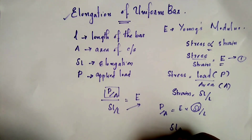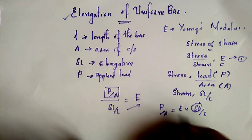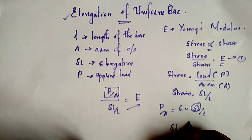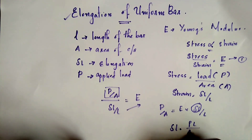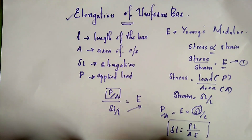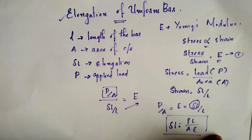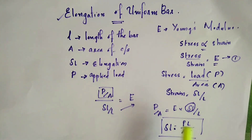Rearranging, delta L is equal to P multiplied by L divided by A and E. Therefore, delta L equals PL divided by AE. This is the elongation formula for a uniform bar.